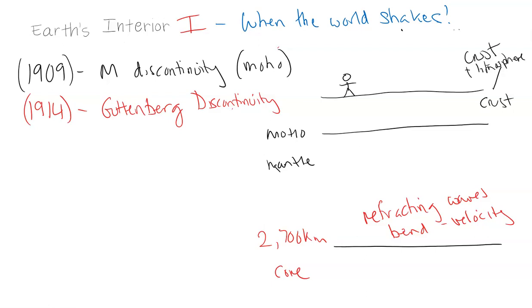They were bending and changing velocity when they reached the core. He found that the P waves would change velocity, but the S waves that moved like a snake, they stopped. They stopped progressing through the Earth's interior. It was like they hit a wall that they couldn't go through. So the S waves stopped abruptly at the core-mantle boundary, whereas the P waves would continue through and they would change velocity.